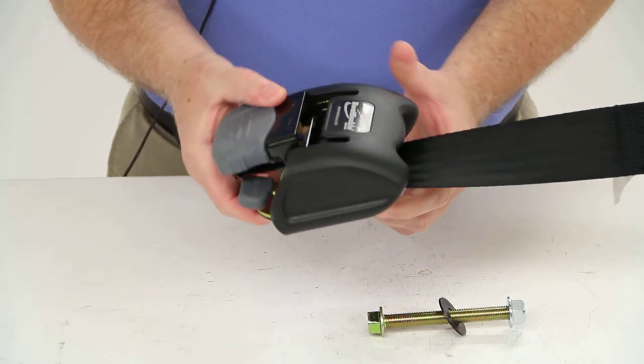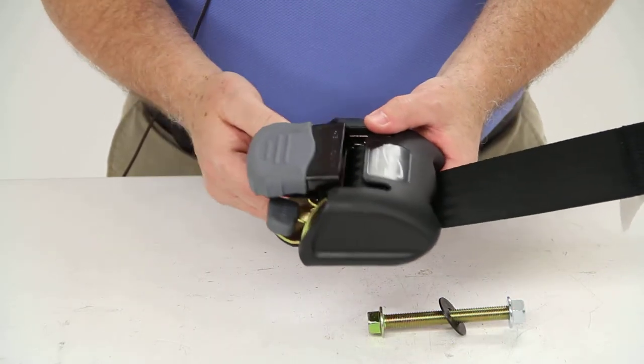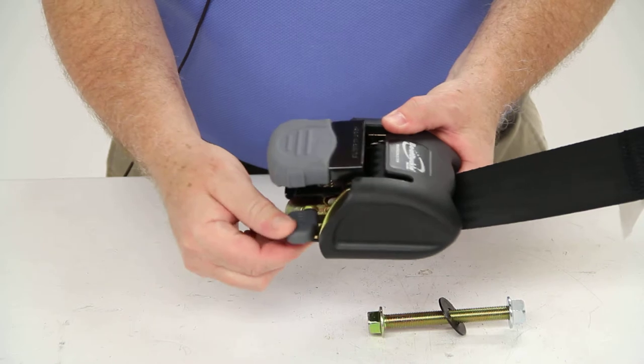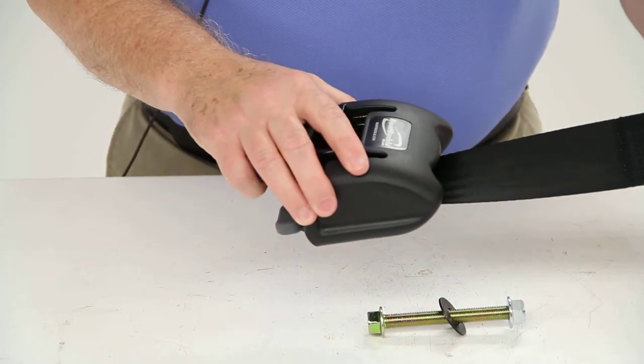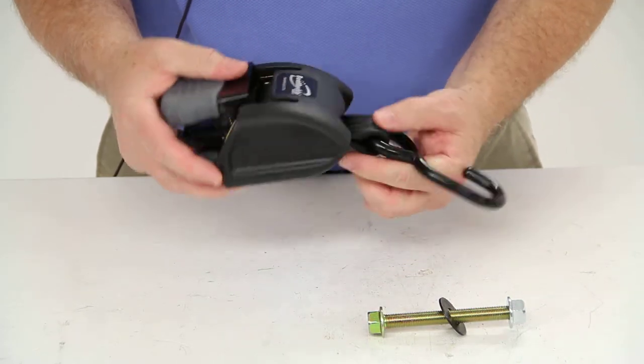Once you release it, it's automatically locked in place. When you need to release it, push down on the release button. You can release the S-hook and it will automatically retract back into the housing.